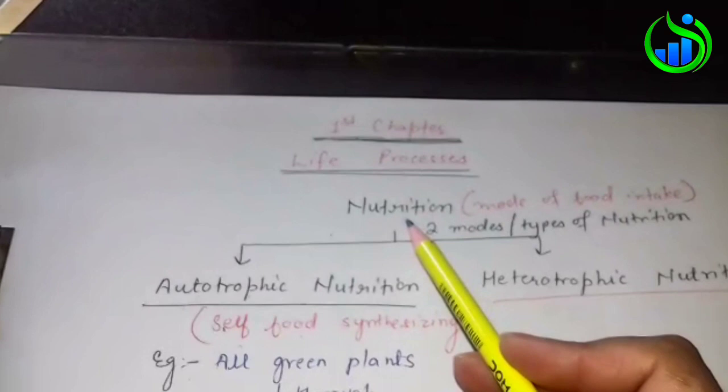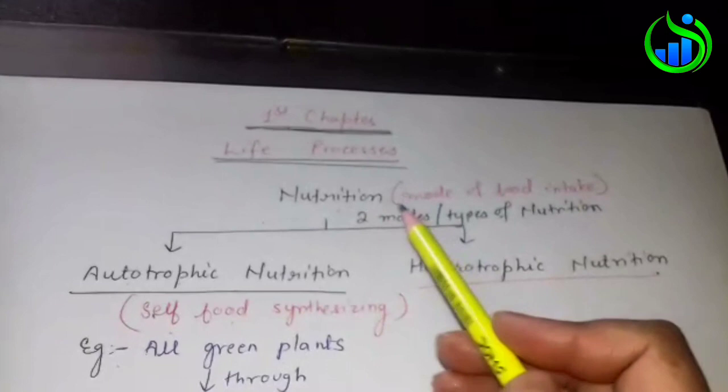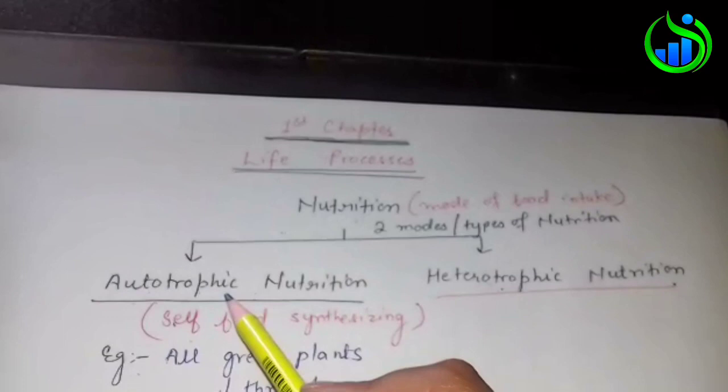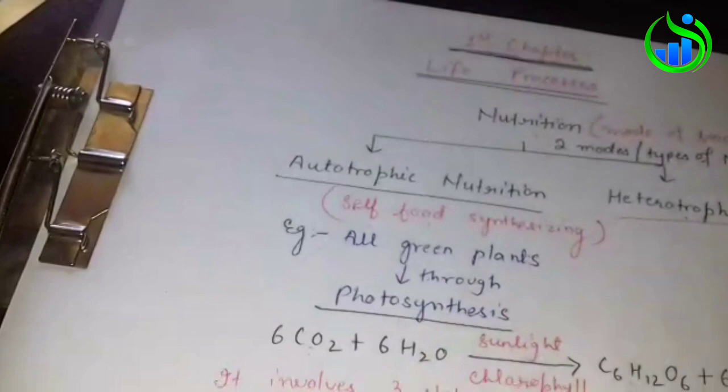It is called nutrition - the mode of food intake. Nutrition includes autotrophic nutrition and heterotrophic nutrition. Autotrophic nutrition is self-food synthesizing, where organisms prepare food through the process of photosynthesis.